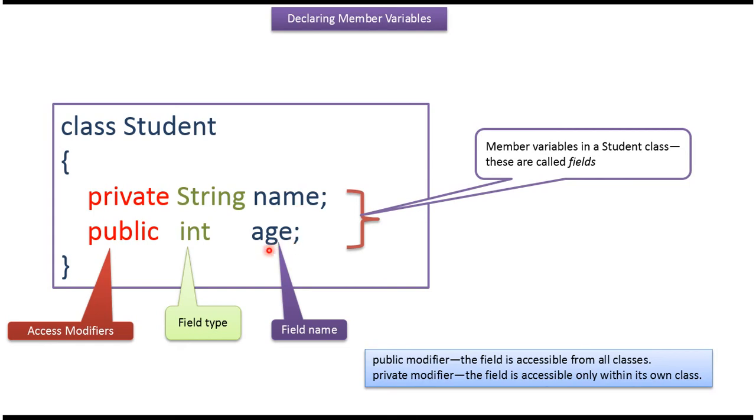Age is declared as public, so the age field can be accessed from all classes. This is how to declare member variables. Thanks for watching.